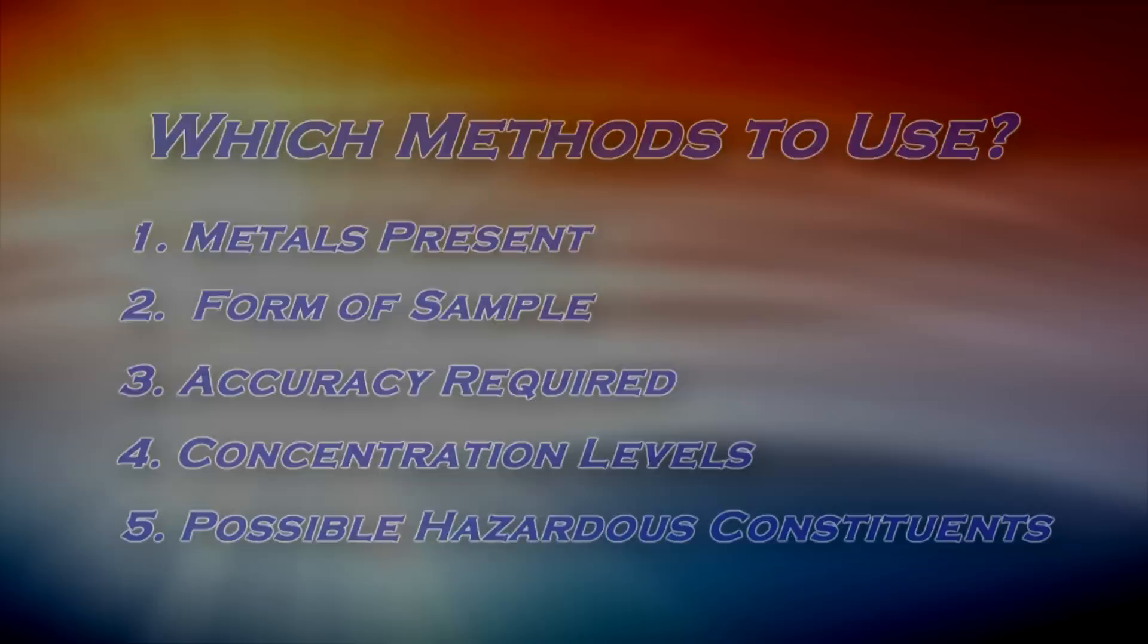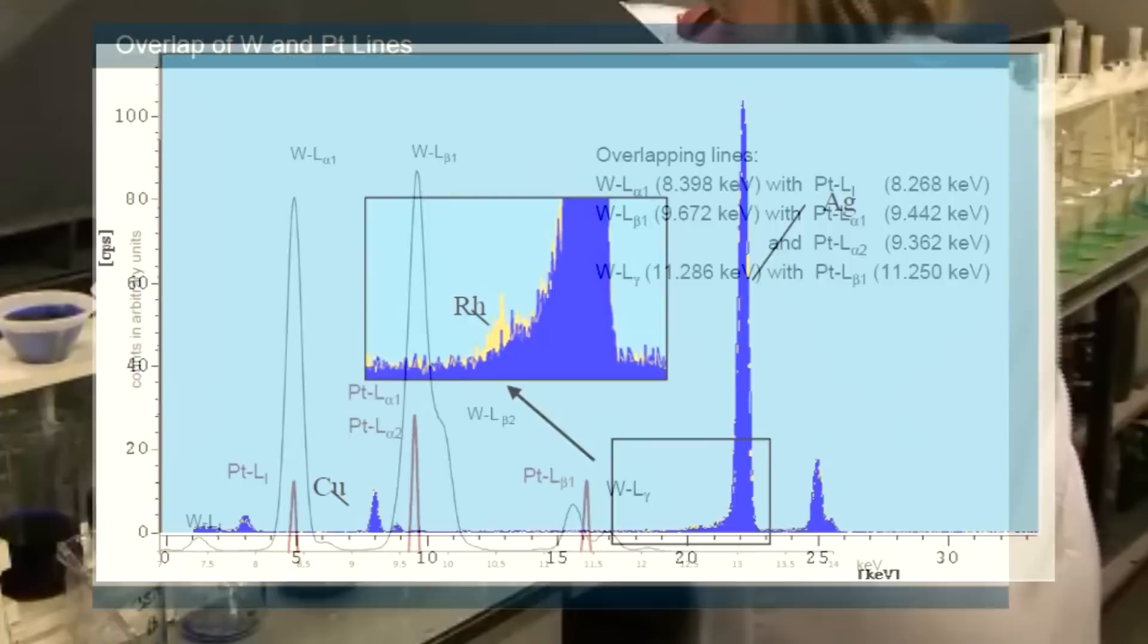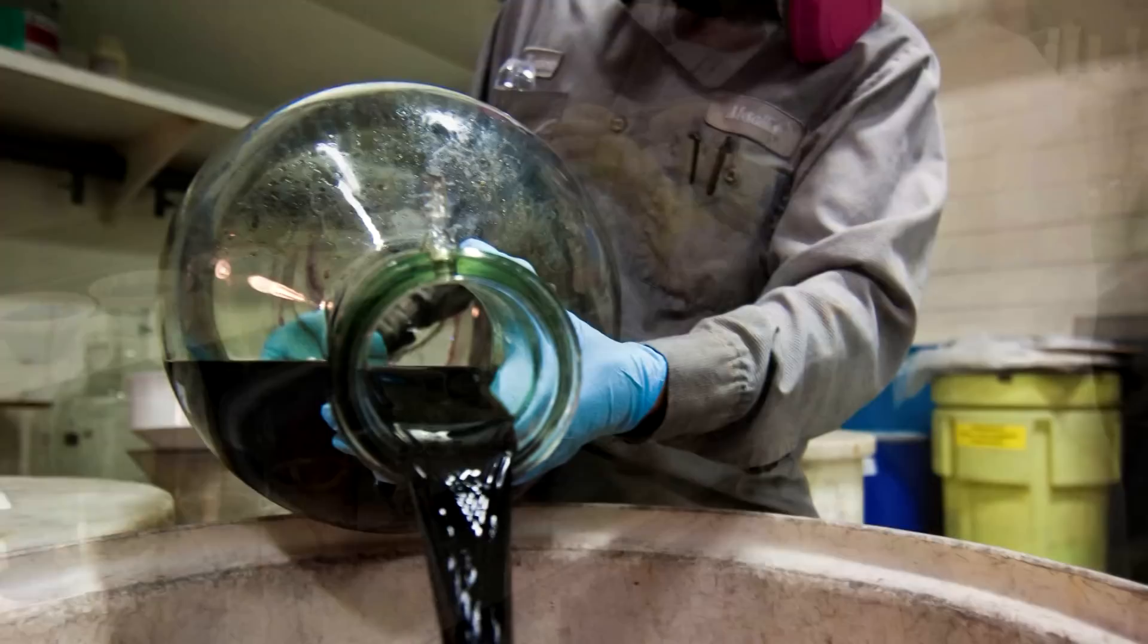Plus, additional elements present in a sample can be an important consideration since the presence of some elements interferes with results from others in some techniques. The form of the sample, liquid versus solid for example, may also dictate which technique to use unless the sample is first transformed.